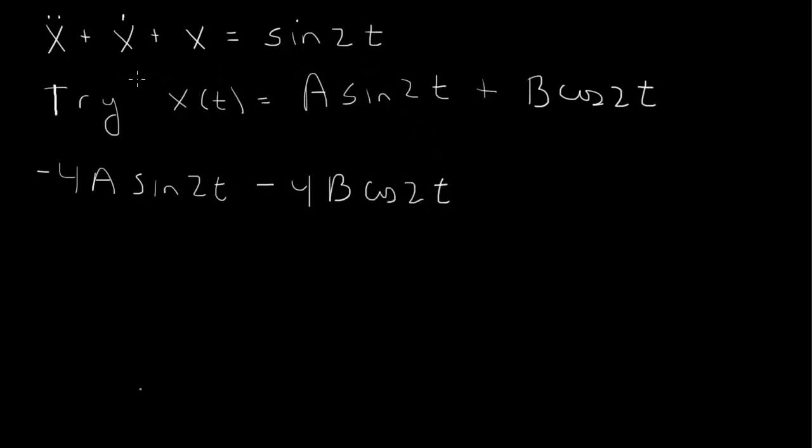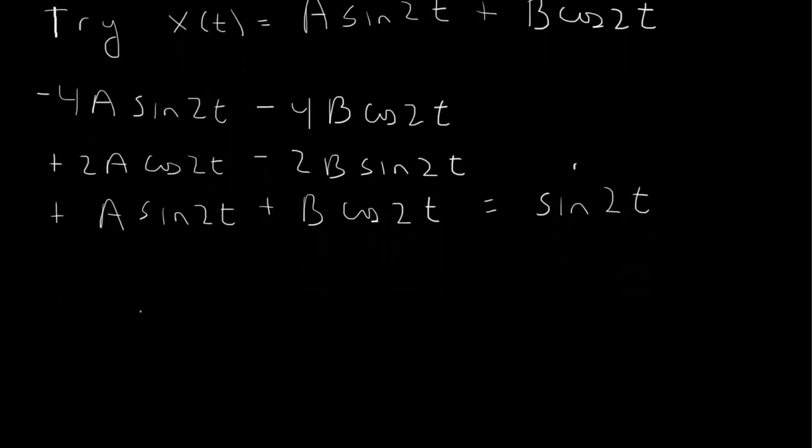And then from the first derivative we'll have plus 2a cosine 2t and minus 2b sine 2t. And the function itself is a sine 2t plus b cosine 2t. And that's supposed to match the right hand side which is sine 2t.